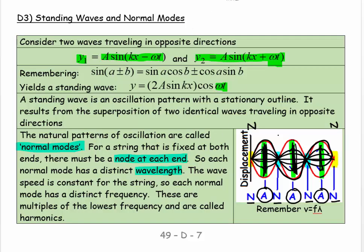Let me just quickly show you that. So if that's our string length, I could have a normal mode that looks like that. And in that case, the wavelength is twice the length of the string. I could have a normal mode that flip-flops like that. And there the wavelength is the length of the string.